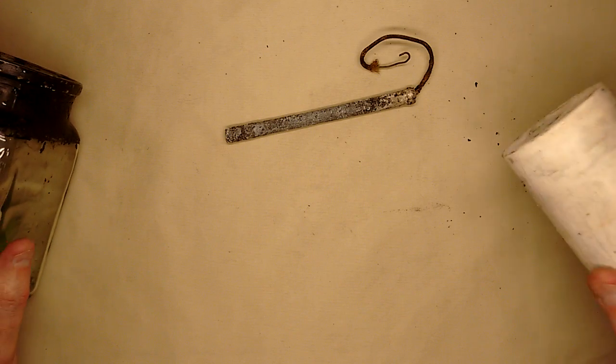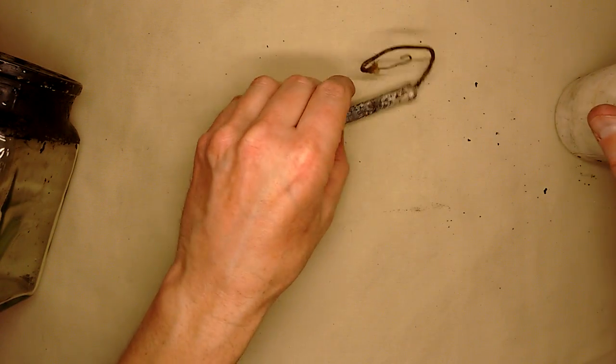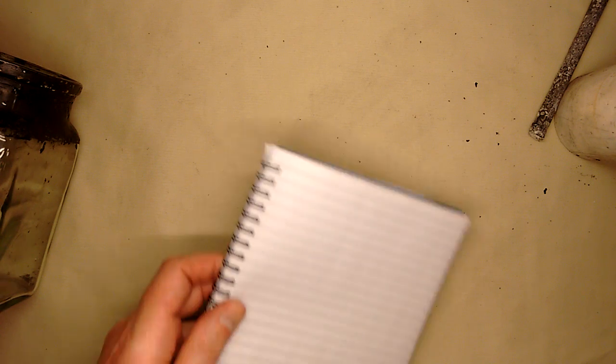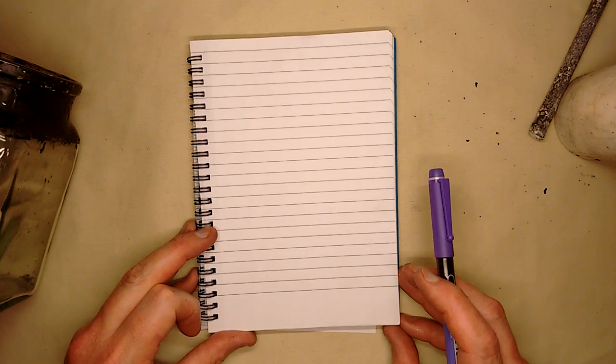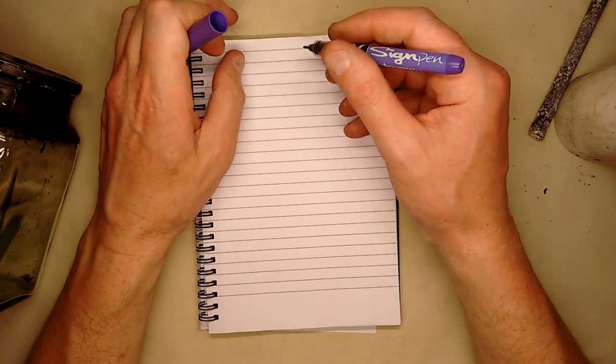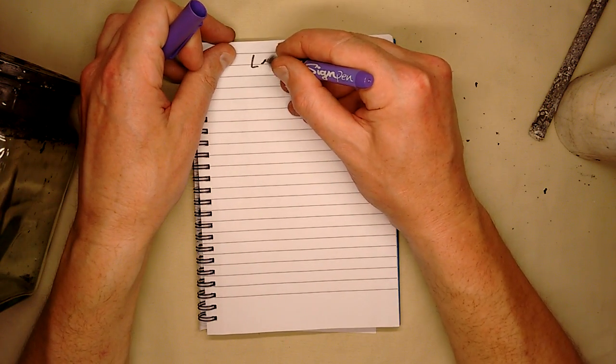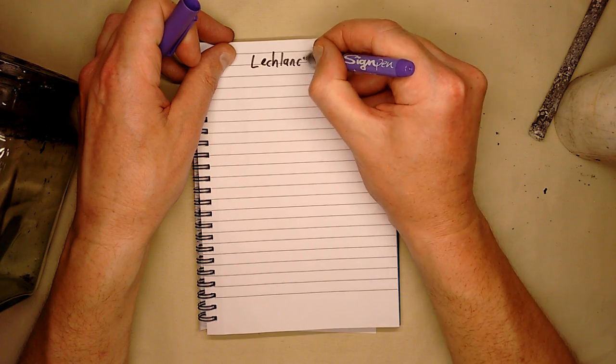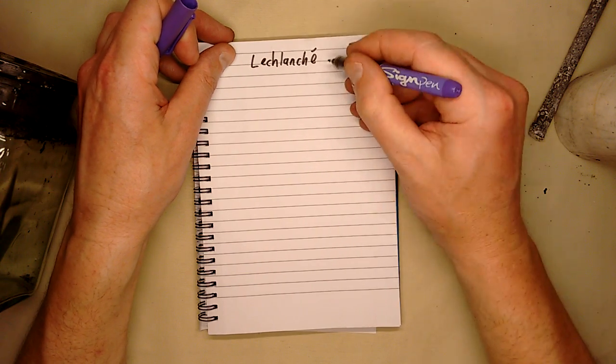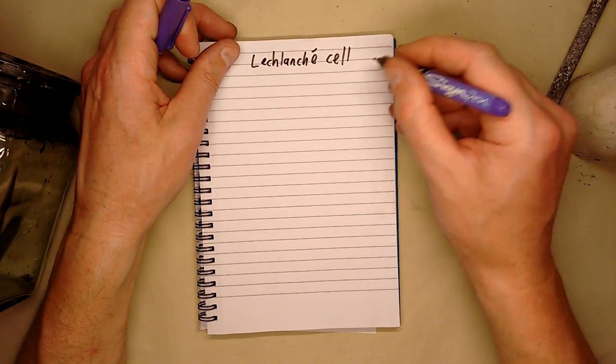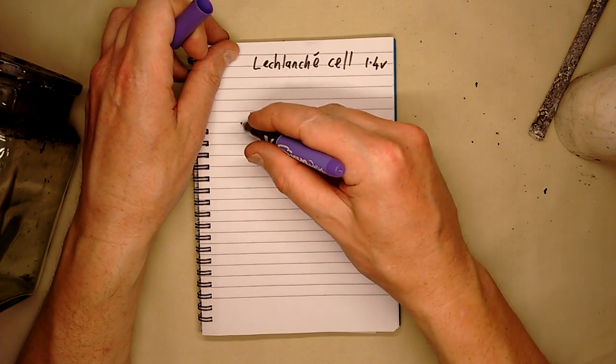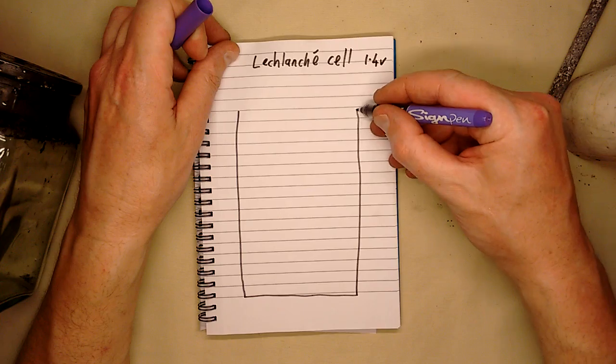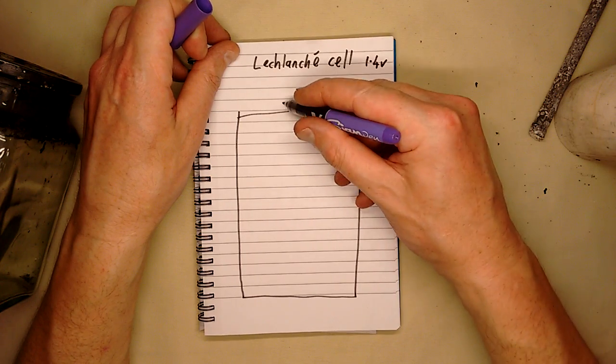And if I doodle what's actually down here, where's the notepad? So, the cell was invented by Georges Leclanché. So it's Leclanché cell. And its voltage was roughly 1.4 volts. And it consisted of the glass jar, the pot,